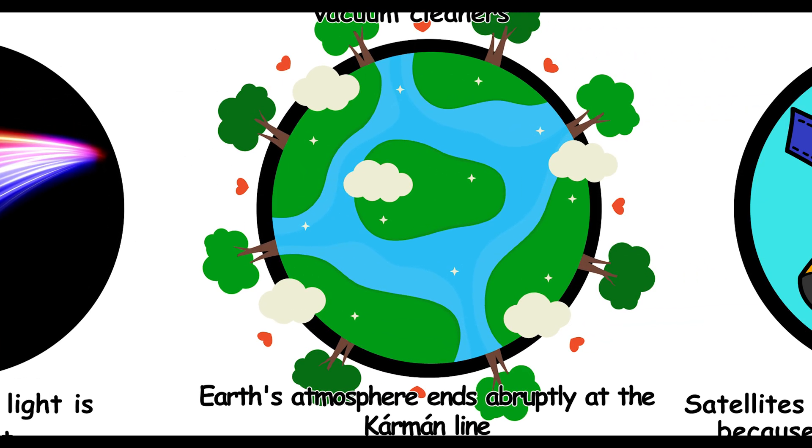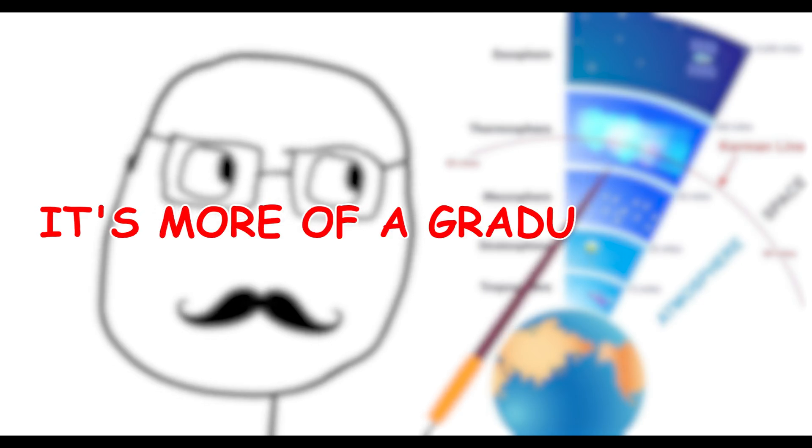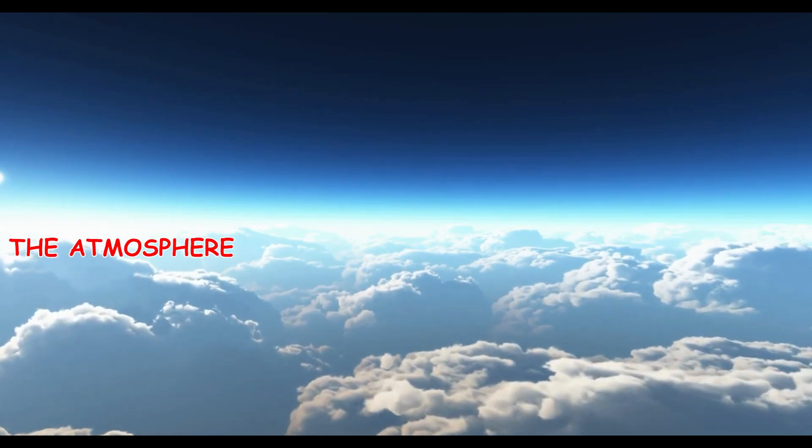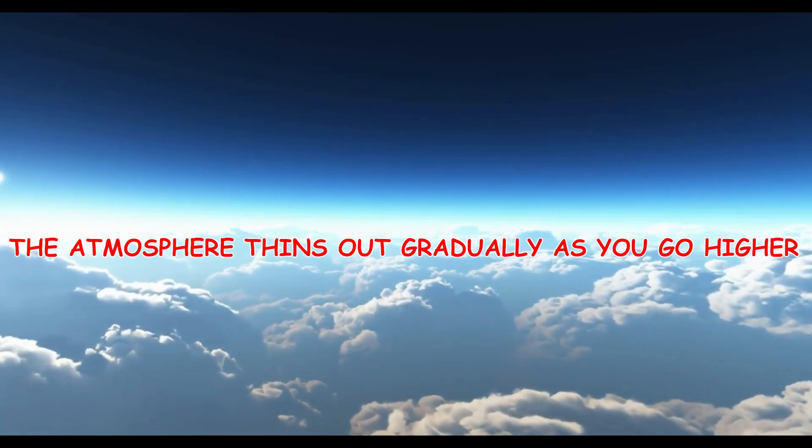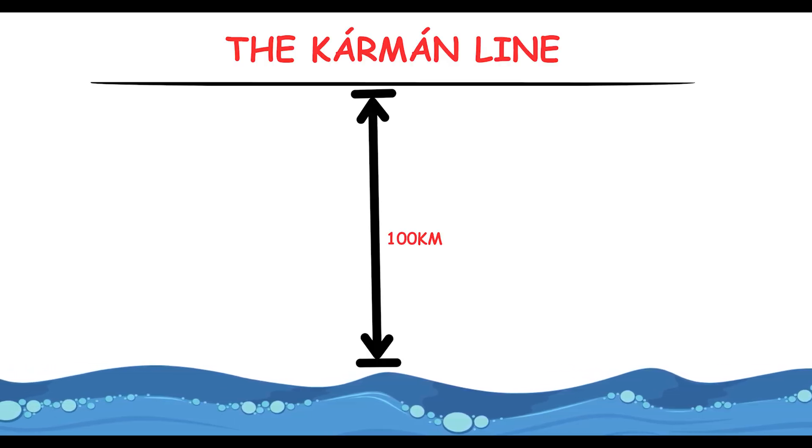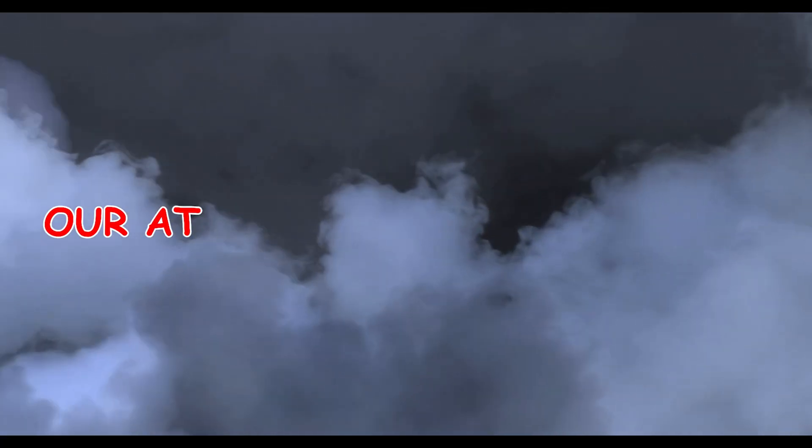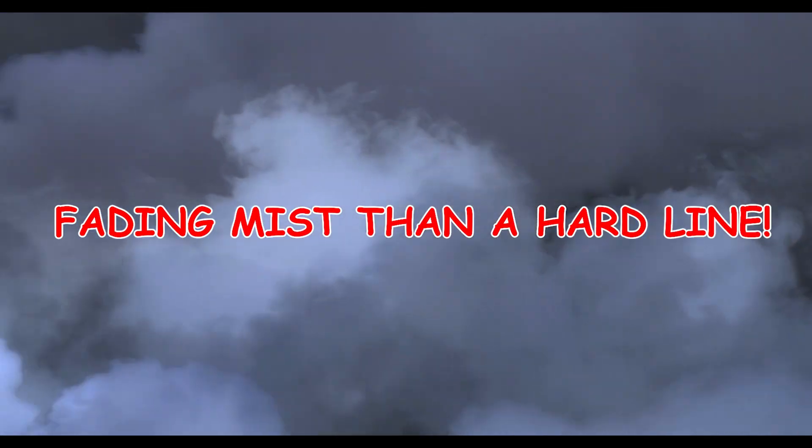Earth's atmosphere ends abruptly at the Kármán line. Think Earth's atmosphere ends suddenly at the Kármán line? It's more of a gradual fade. The atmosphere thins out gradually as you go higher, with no clear boundary. The Kármán line, at 100 kilometers above sea level, is an arbitrary boundary for space. So our atmosphere is more like a fading mist than a hard line.